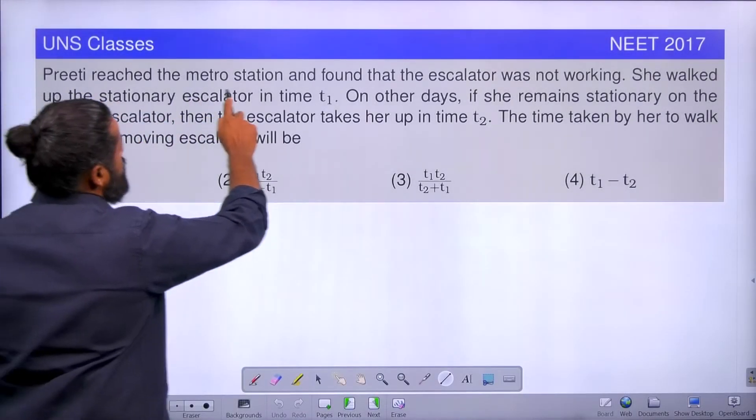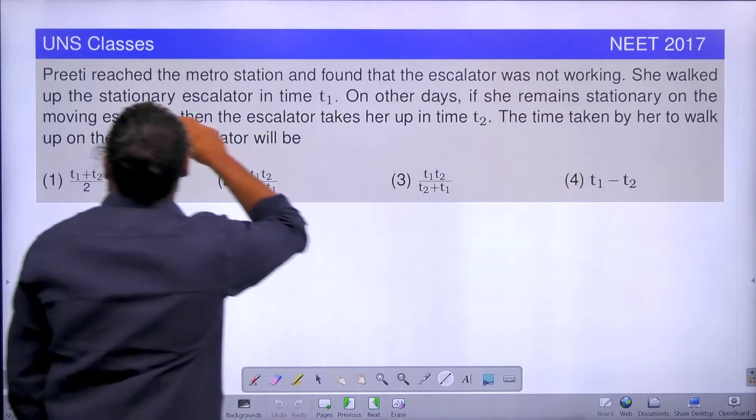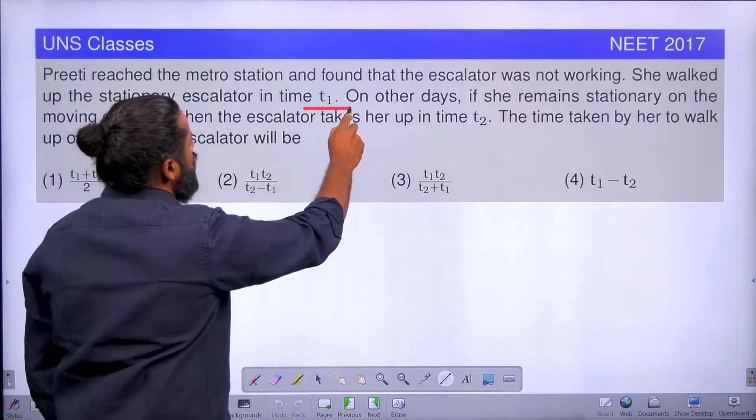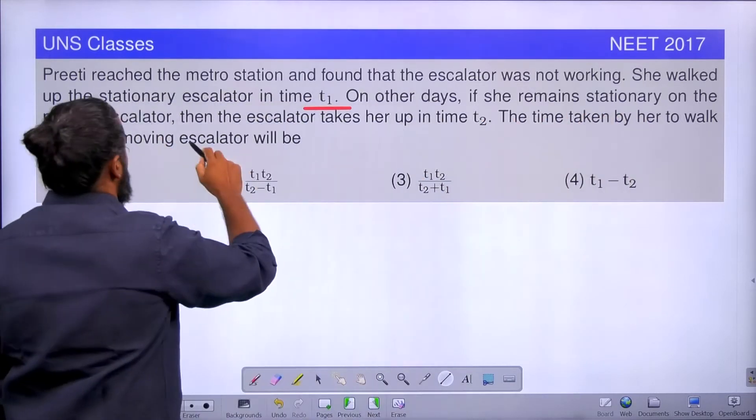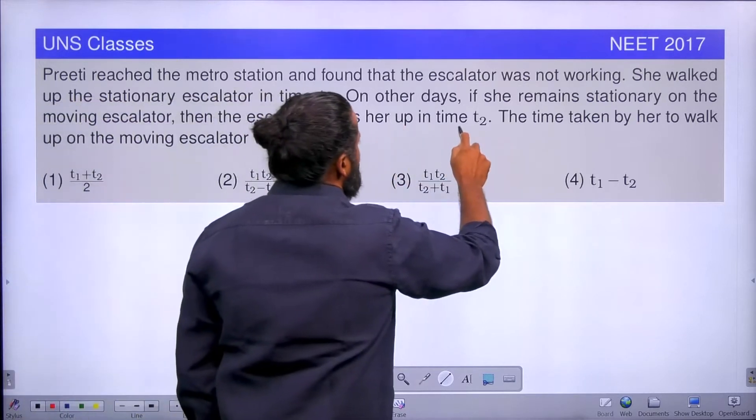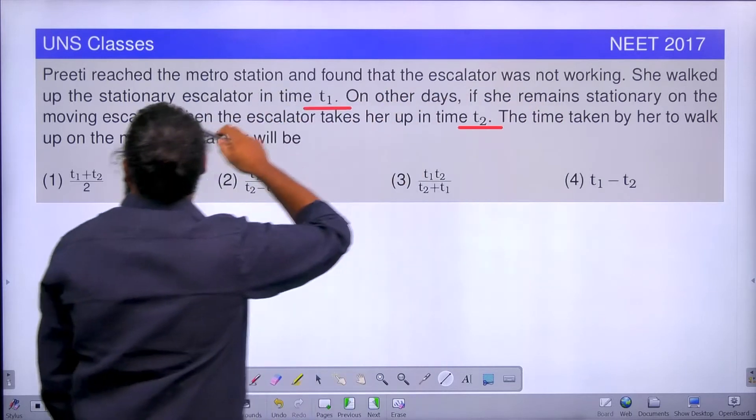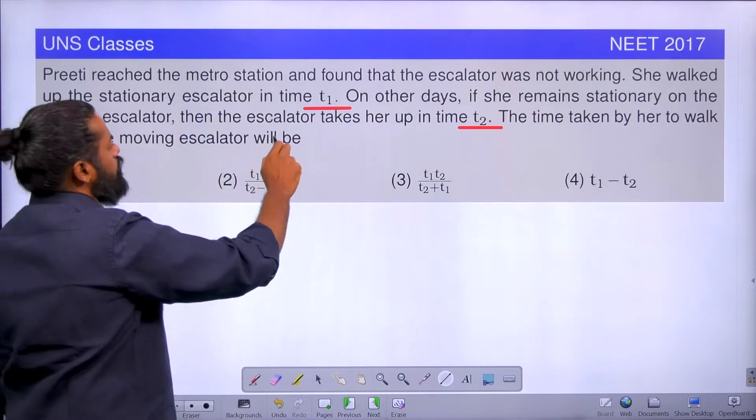Preeti reached the metro station and found that the escalator was not working. She walked up the stationary escalator in time T1. On the other days, if she remains stationary on the moving escalator, then the escalator takes her up in time T2. The time taken by her to walk upon the moving escalator will be.